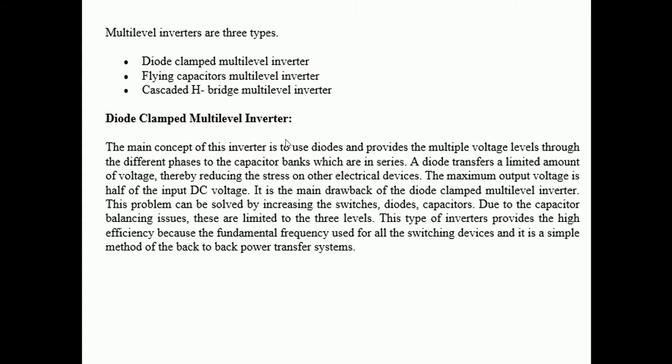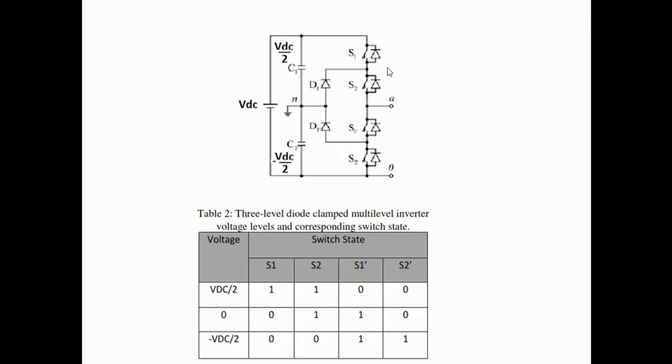First, we will discuss the diode clamp multilevel inverter. The main concept of this inverter is to use diodes and provide multiple voltage levels in the different phases via capacitor banks in series. A diode transfers a limited amount of voltage, thereby reducing the stress on other electrical devices. The maximum output voltage is half of the input DC voltage, which is the main drawback. This problem can be solved by integrating switches, diodes, and resistors due to capacitor balancing issues, and these are limited to three levels. This inverter provides high efficiency because of fundamental switching frequency, and it is a simple method for back-to-back power transfer systems.